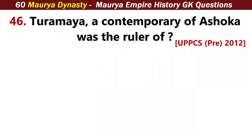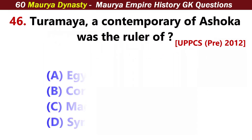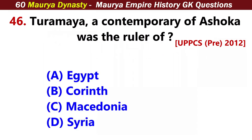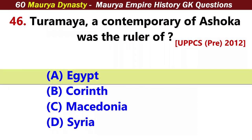Antiochus II, a contemporary of Ashoka, was the ruler of? Answer A: Egypt.